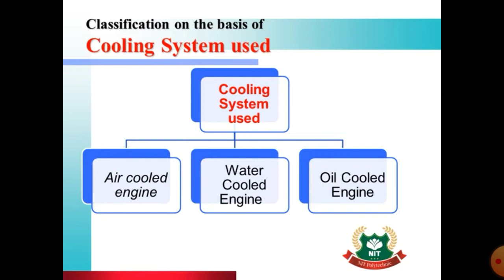Another type is the oil-cooled engine. These engines are generally used in two-wheelers where the engine size makes pure air cooling insufficient. Oil-cooled engines are found in the premium segment of motorcycles — for example, sports bikes like the Pulsar 180 and TVS Apache use this oil-cooled system.